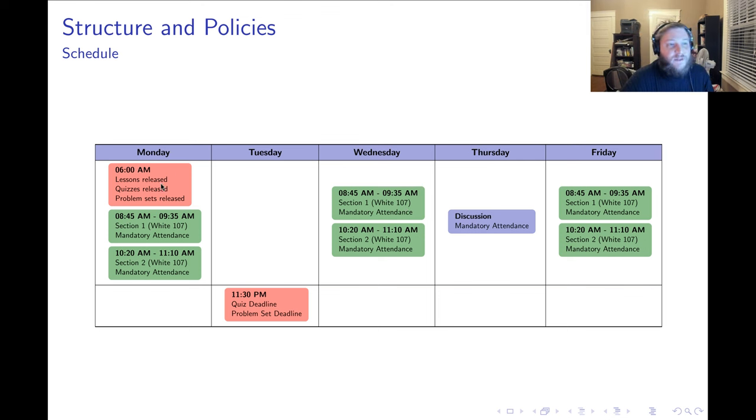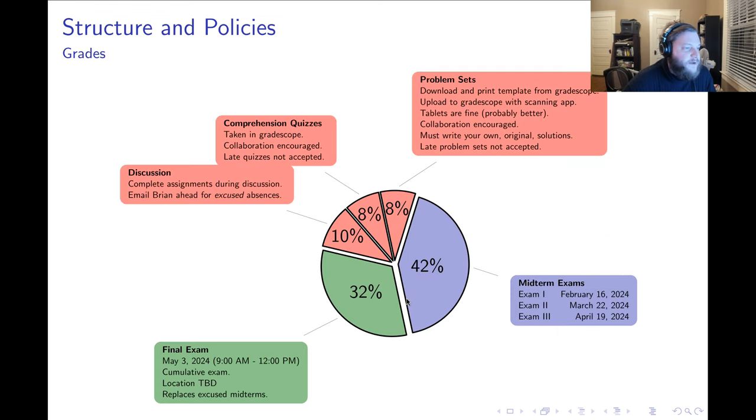Now, I mentioned that assignments are released Monday mornings at 6 a.m. Well, the deadline for every assignment is always the following, so eight days later, Tuesday, and that deadline is 11:30 p.m. Everything is done in Gradescope. I'll say more about that in one second.